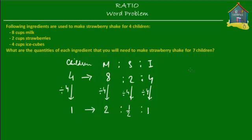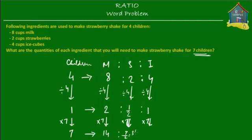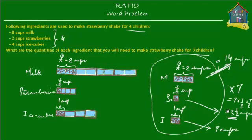Now that's for one child, but if we have seven children, you simply multiply by seven. So for seven children, milk is two times seven equals 14; strawberries is half times seven equals seven over two or three and a half; and ice cubes is one times seven equals seven. So the quantities for seven children are 14 cups of milk, three and a half cups of strawberries, and seven cups of ice cubes — the same answer as method one.